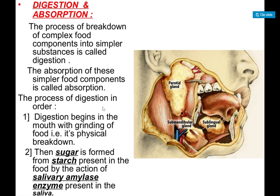Digestion is the process of breakdown of complex food components into simpler substances. We eat things in a very complex form, and digestion converts them into a simpler form so that our body can easily use them for growth or energy. After food breaks into small simple parts that our body can absorb and use, that process is known as absorption.